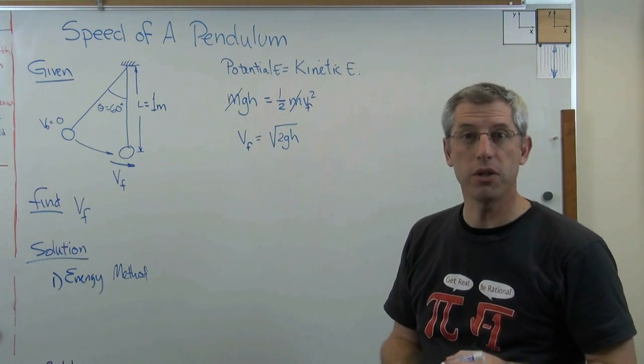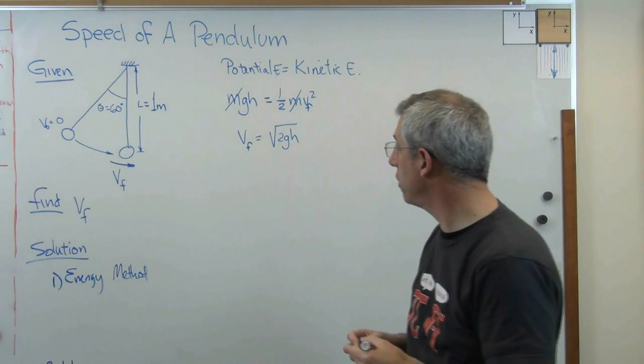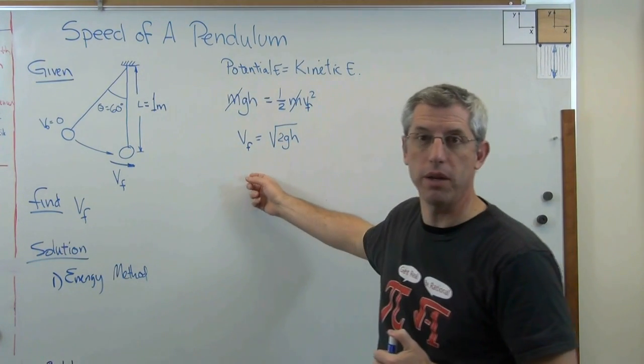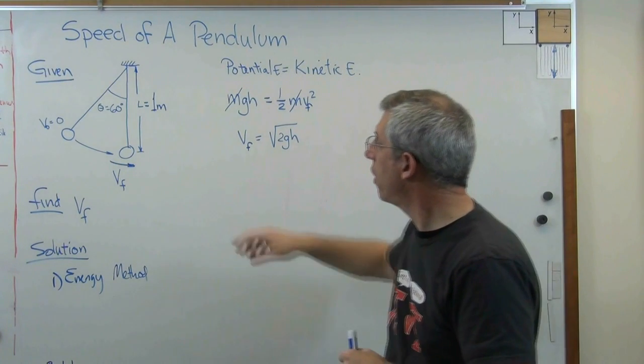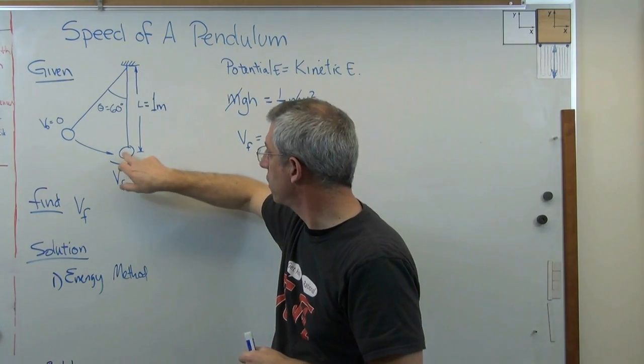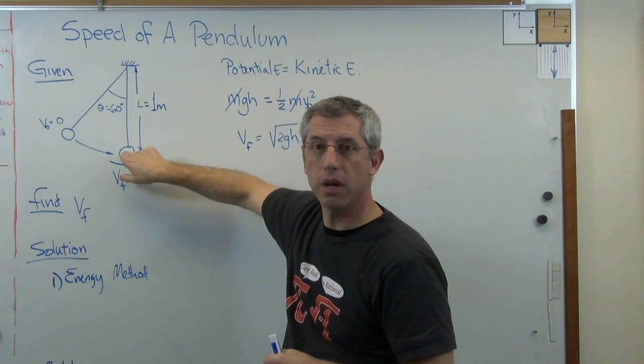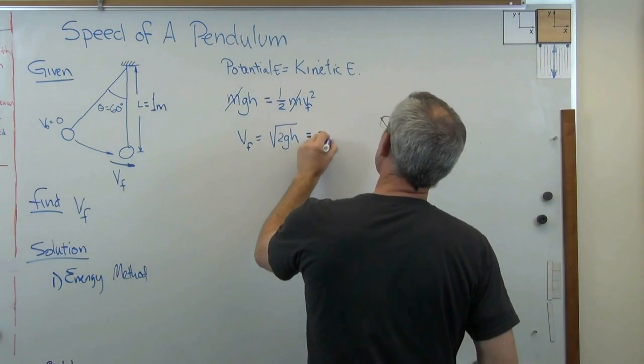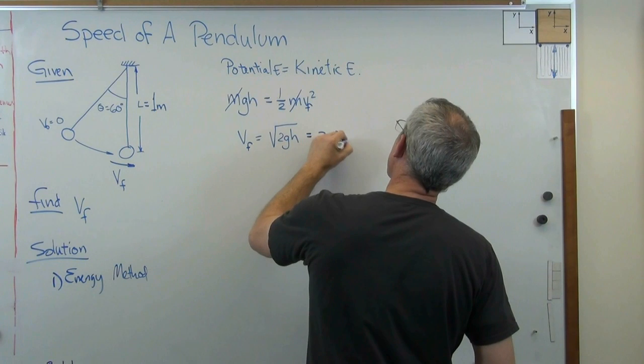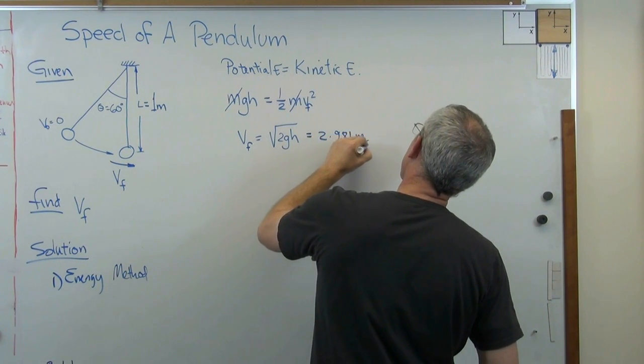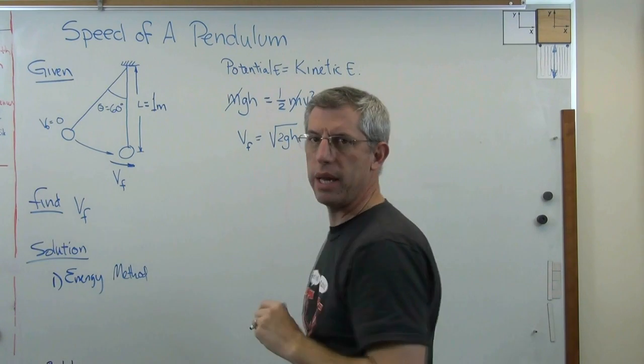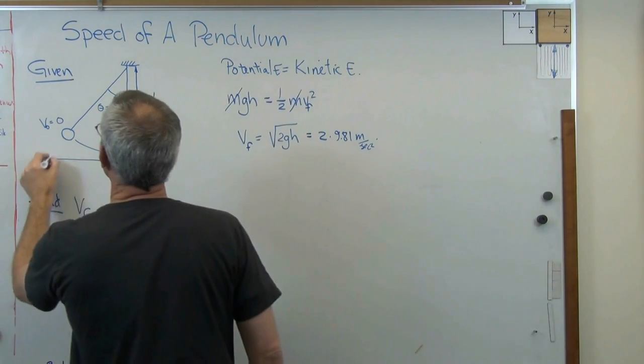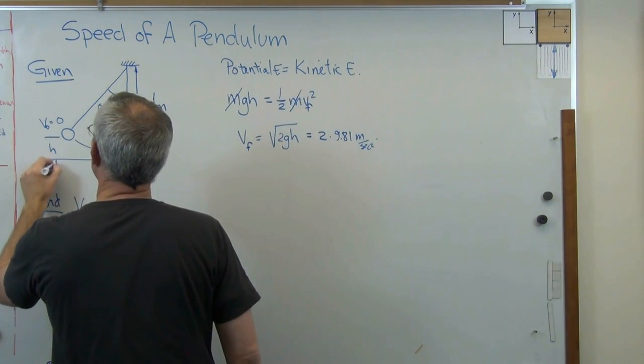Notice what doesn't show up - mass doesn't show up. It turns out it doesn't matter what the pendulum weighs. You can weigh anything as long as that's really a good pivot and as long as the mass is concentrated down there. Let's put some numbers into this. You get 2 times 9.81 meters per second squared times the height. Well, we don't know the height yet. That's the height right there.